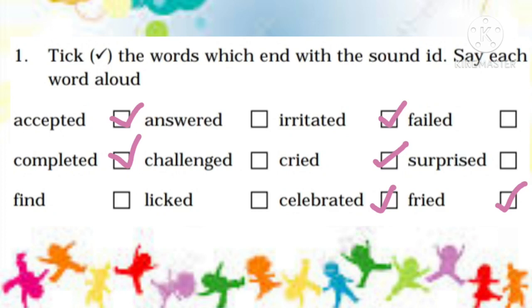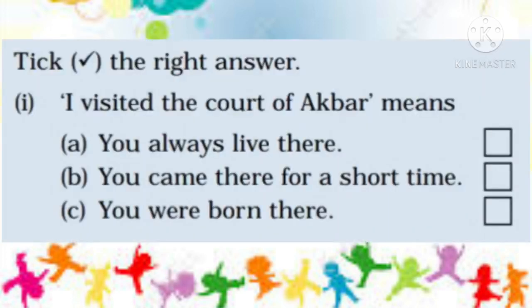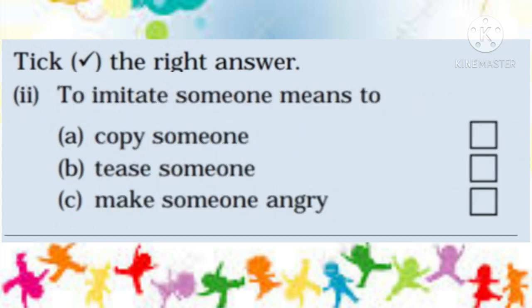Next question: Tick the right answer. 'I visited the court of Akbar' means — options are: (a) you always live there, (b) you came there for a short time, (c) you were born there. The correct answer is (b) you came there for a short time. Next question: 'To imitate someone' means — options are: (a) copy someone, (b) tease someone, (c) make someone angry. The correct answer is (a) copy someone.